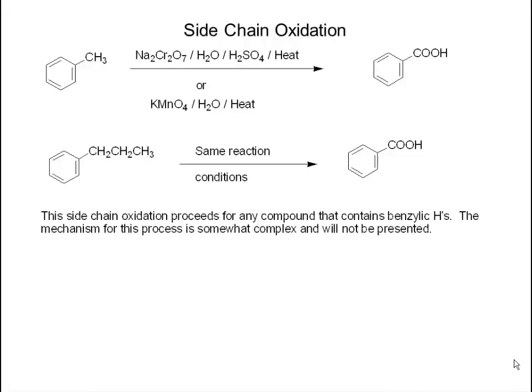In this tape, we are going to look at some of the reactions that the benzene ring does when it's part of a compound. Mostly what we're going to see in this section are reactions that we already know — we're just going to look at how the benzene ring affects them. We're going to start with a totally new reaction called side chain oxidation.